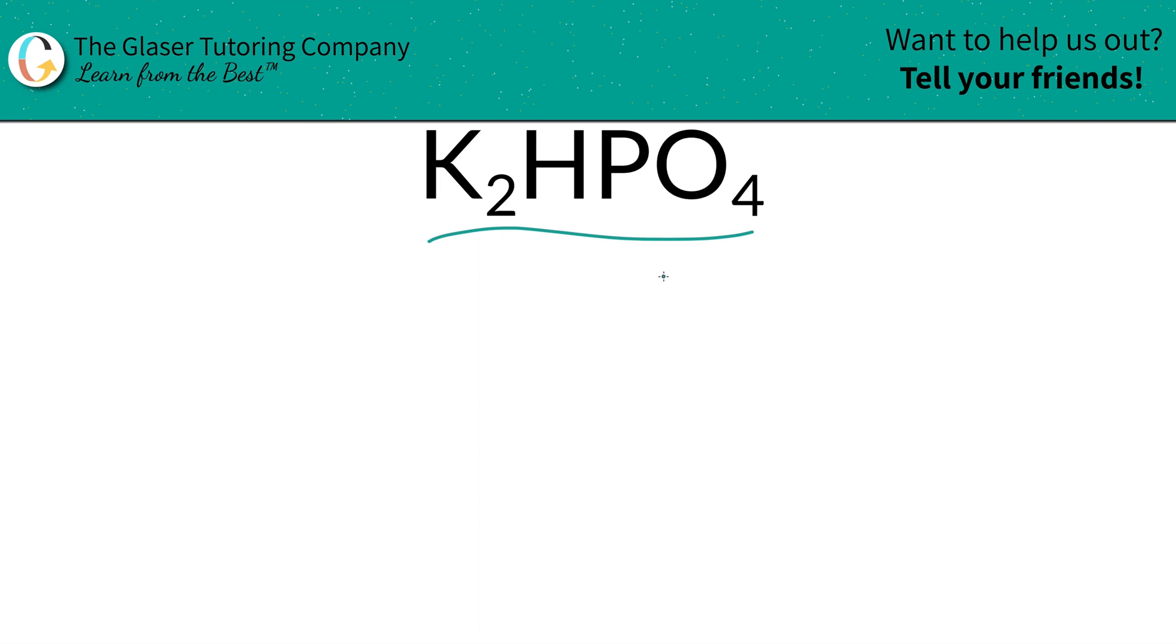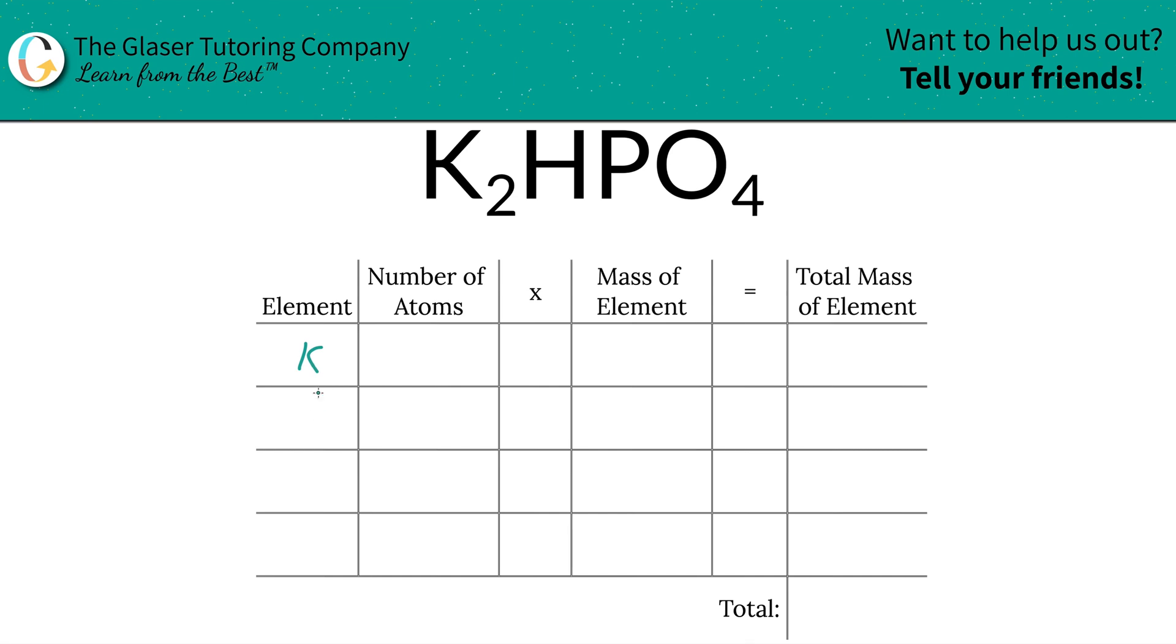I created a nice little table to help us out. So the first thing we're going to do is write the elements we see. So we got potassium, we got hydrogen, we got phosphorus, and we got oxygen.